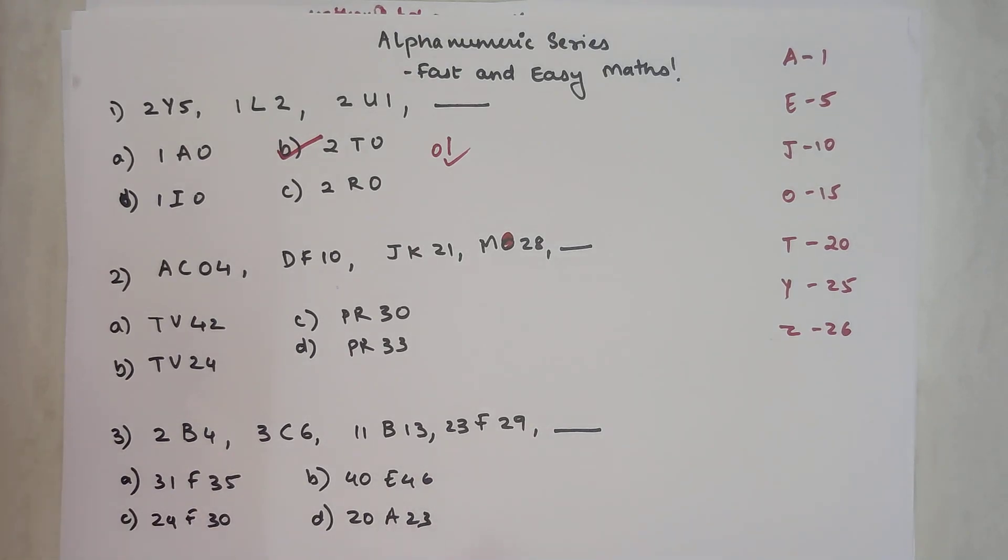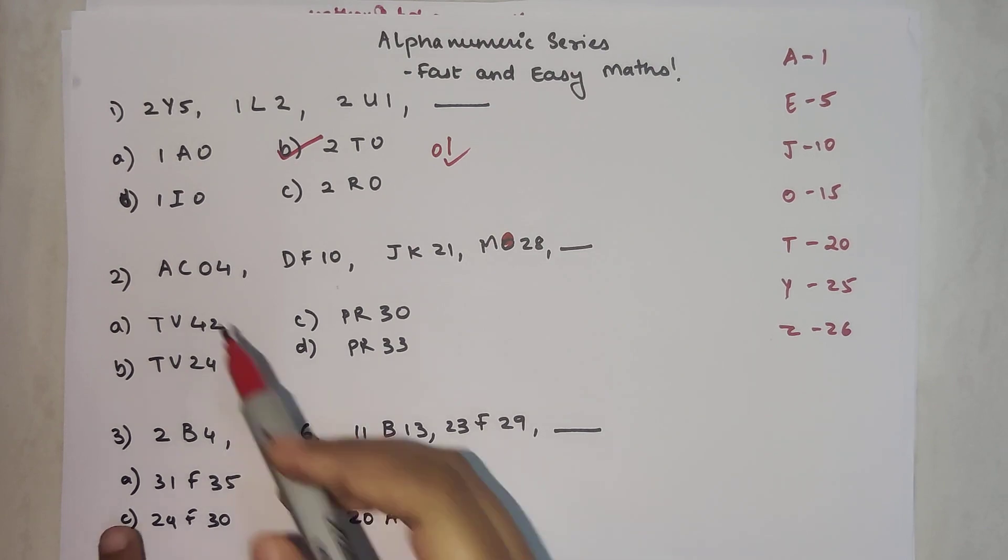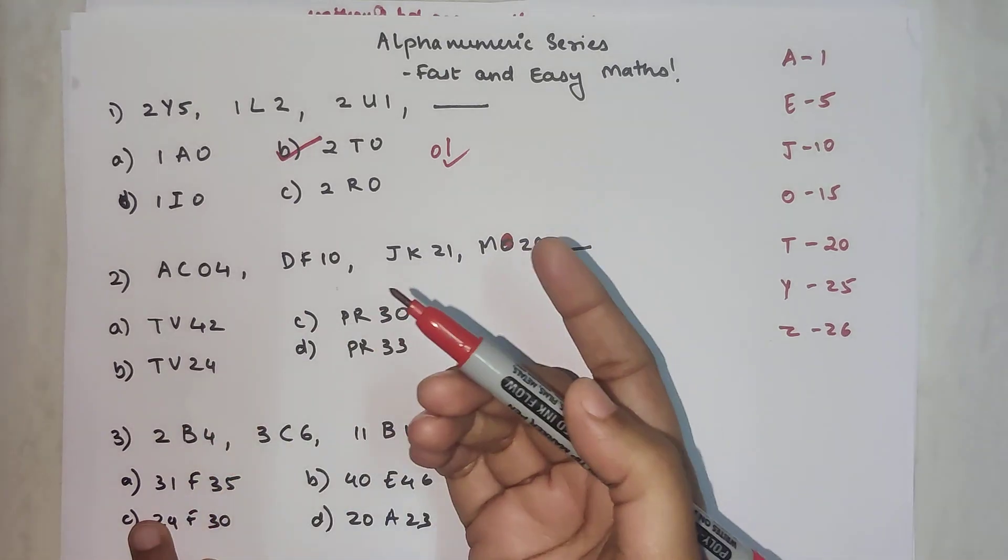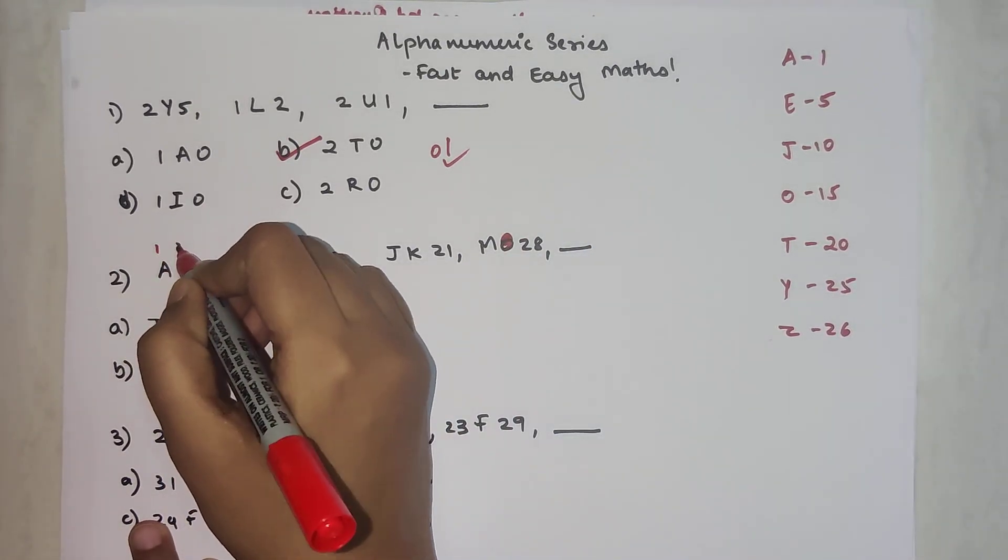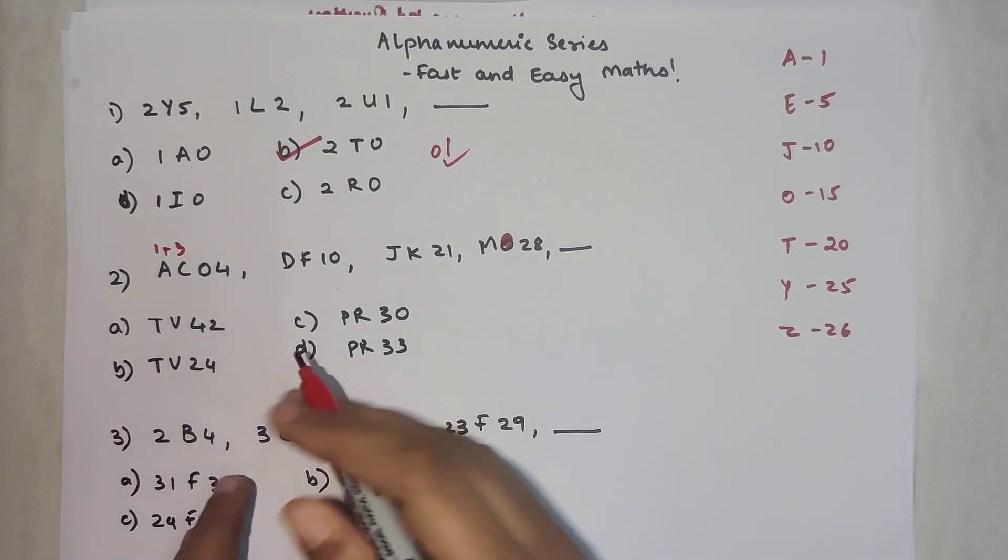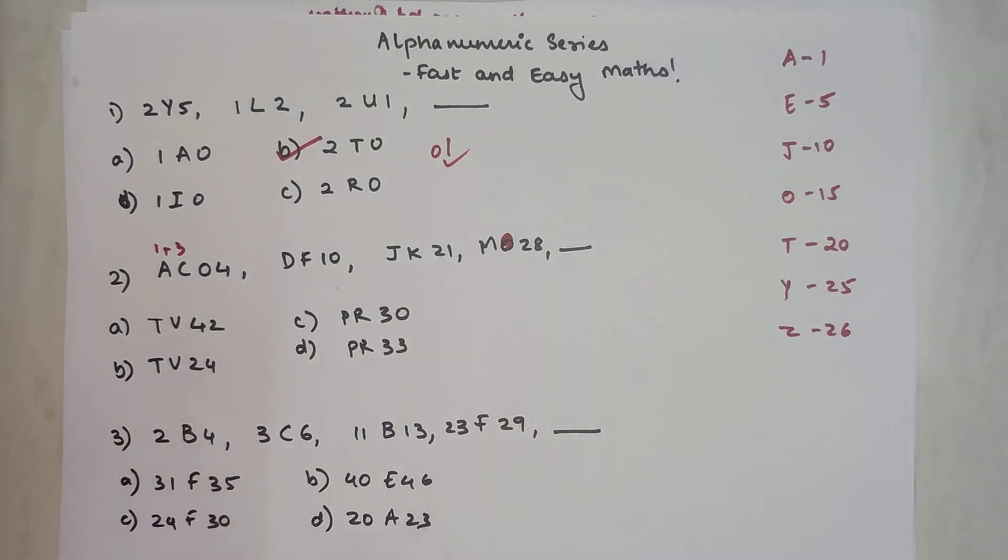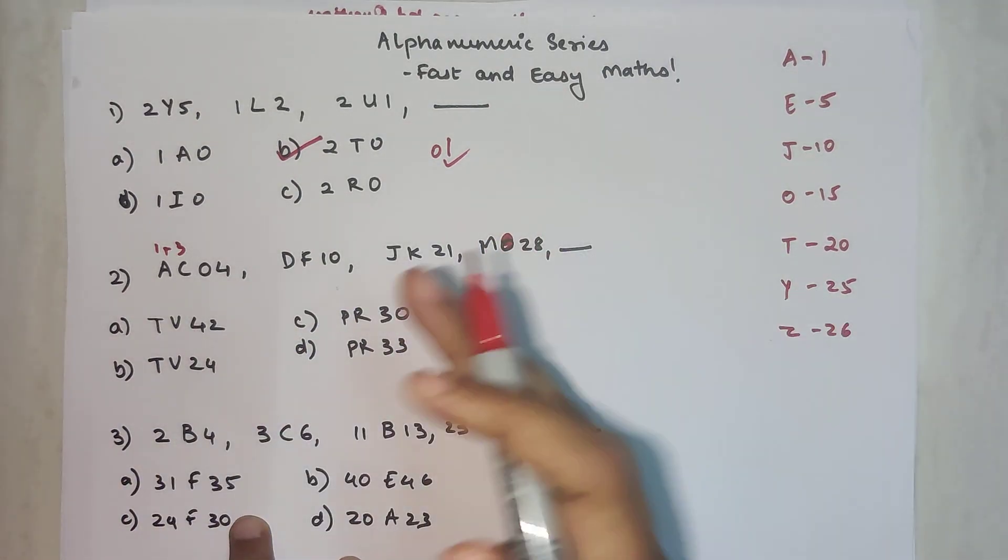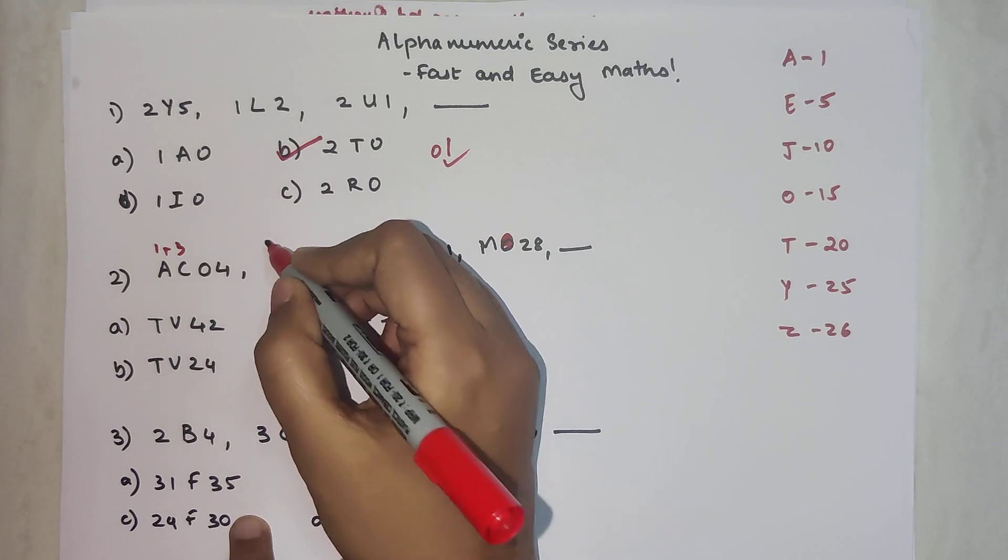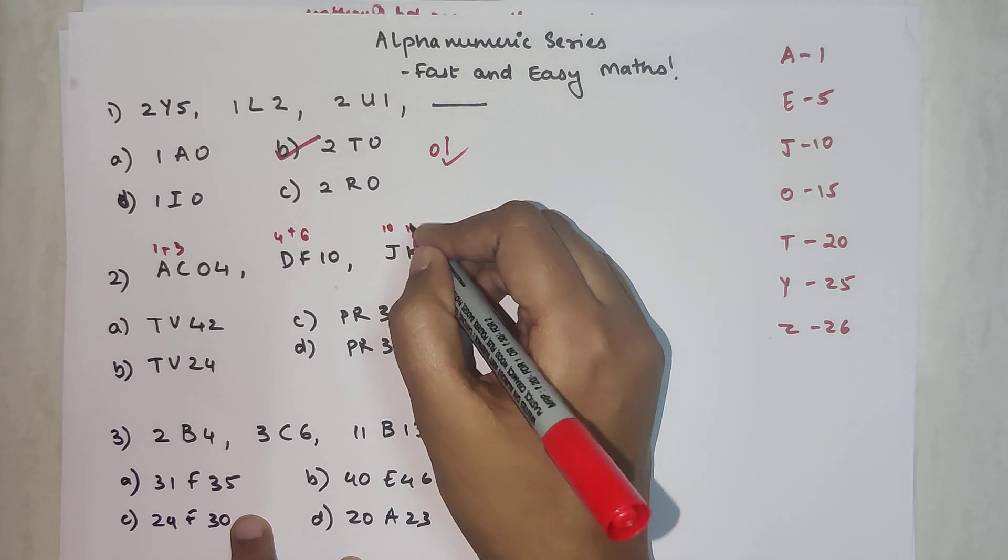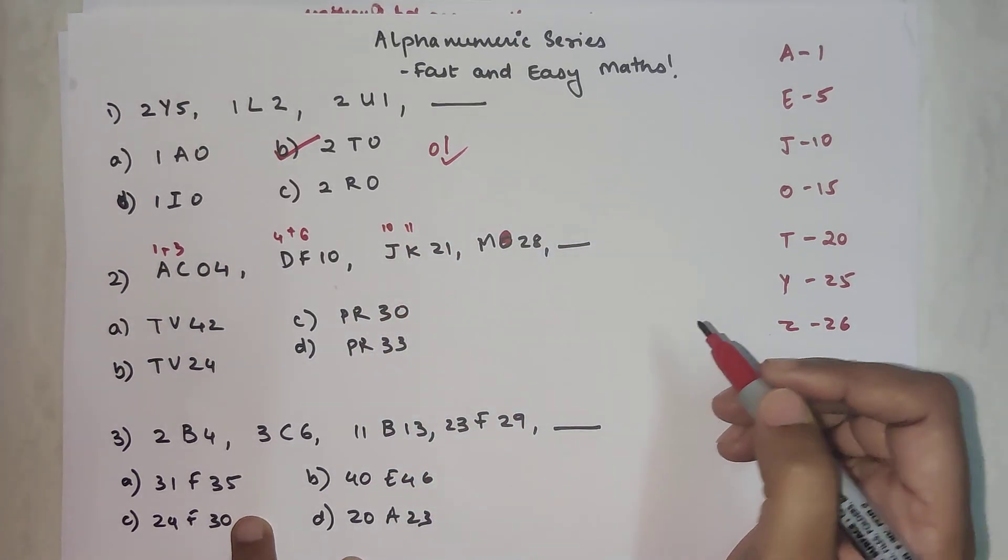Then what should be your next series? A is standing on one, B is second, C will be three. So one and three when you add them you get four. We are writing it as 04 because all the elements in the series have four different numbers or alphabets. D is four, F is six. When you add them you get ten. J is ten, K is eleven. When you add them you get twenty-one.